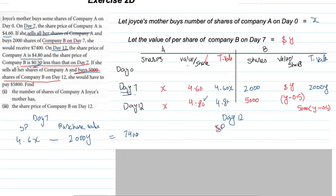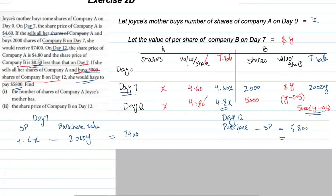So on day twelve, the sale of Company A shares gives 4.8x dollars. Purchasing 5000 shares of Company B at (y − 0.5) per share: total purchase cost is 5000 × (y − 0.5). Since she pays $5800 extra, the difference between purchase and sale is $5800. Thus: 5000(y − 0.5) − 4.8x = 5800. We now have two equations and will solve them simultaneously.